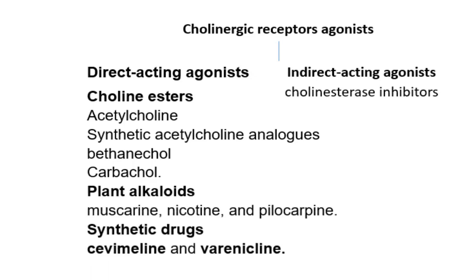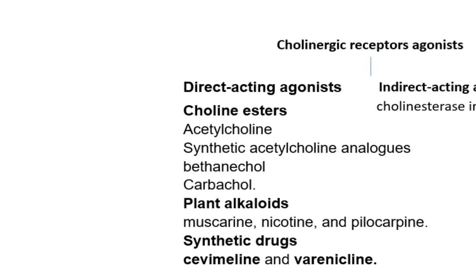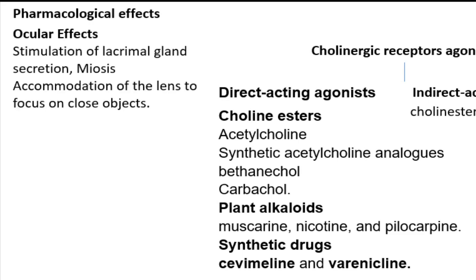Ocular effects: Muscarinic receptor agonists increase lacrimal gland secretion and stimulate contraction of the iris sphincter muscle and the ciliary muscles. Contraction of the iris sphincter muscle produces pupillary constriction (miosis), whereas contraction of the ciliary muscles enables accommodation of the lens to focus on close objects. Stimulation of muscarinic receptors also increases bronchial muscle contraction and causes an increase in the secretion of mucus throughout the respiratory tract. Because muscarinic receptor agonists can cause bronchoconstriction, they should be avoided or used with extreme caution in patients with asthma and other forms of obstructive lung disease.